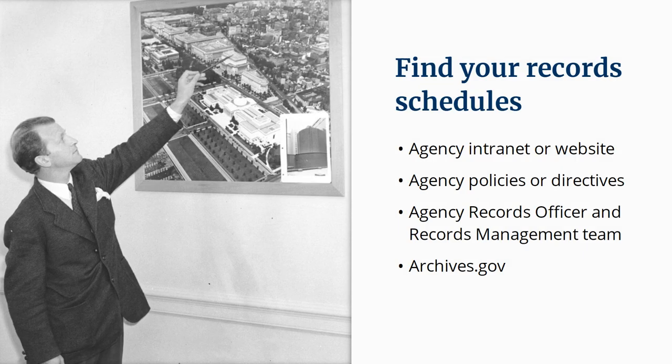When you need to find your own agency's record schedules, there are several key places you can look. First, take a look at your organization's intranet or website — many agencies post their schedules online. You might check your agency's orders, policies, or directives, because many records manuals and schedules are issued that way. Your agency's records officer and network of records contacts will be able to help. You can also find both the General Record Schedules and a collection of agency records schedules on NARA's website at archives.gov.